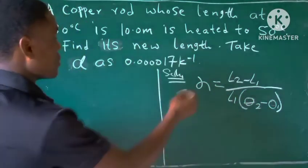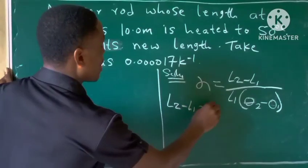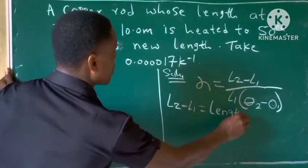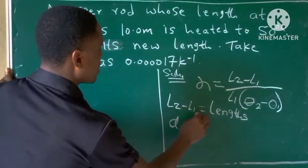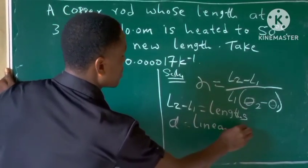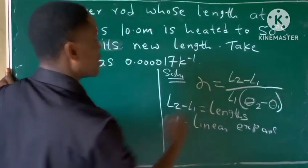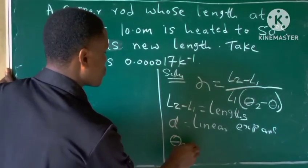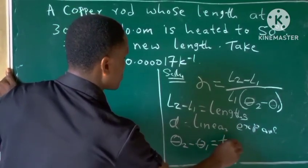The L2 and L1 are the lengths at the given length, and alpha stands for the linear expansivity. The theta 2 and theta 1 stand for the temperatures.